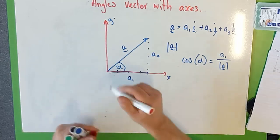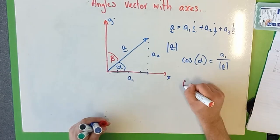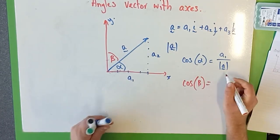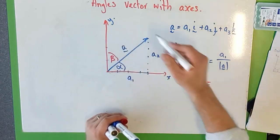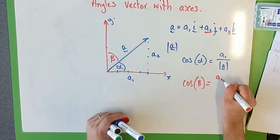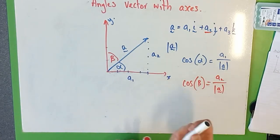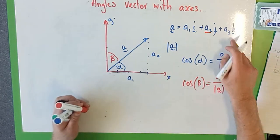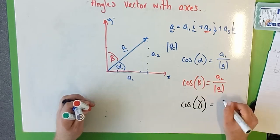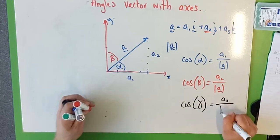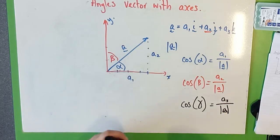What if you wanted to know the angle with the y-axis, beta? Same thing. Cos of beta equals, instead of a1, now we're talking about the angle with j, which is the a2. So a2 over the magnitude of a. And you guessed it, if you wanted to do the angle with the z-axis, you can say cos gamma equals a3 over the magnitude of a.